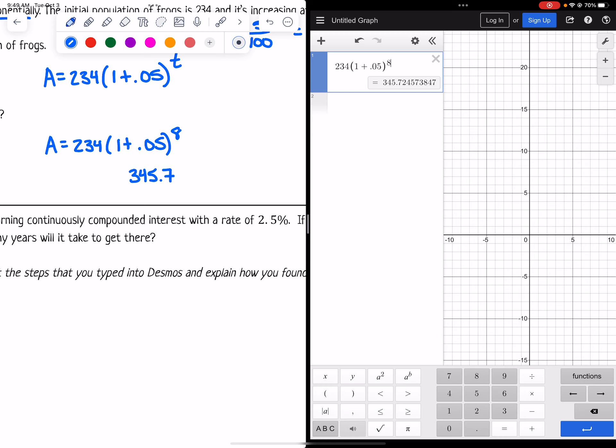But with frogs, it doesn't make sense to have a part of a frog, so let's just round that up to 346 frogs because that would make more sense.